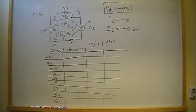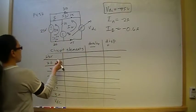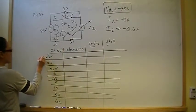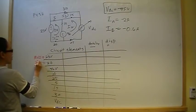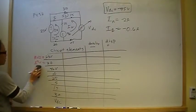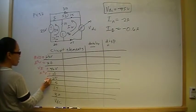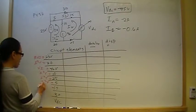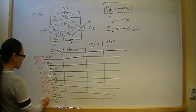Now let's set up the power calculations. For voltage sources we use P = V·I, and for resistors we use P = I²·R. The 23V source uses V·I; the 20Ω resistor uses I²·R; the 46V source uses V·I; and so on for 10Ω, 25Ω, 5Ω, 15Ω, 30Ω, and V_dc.